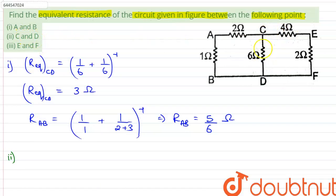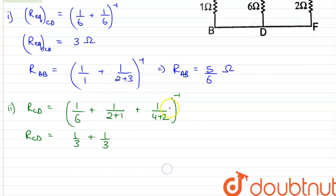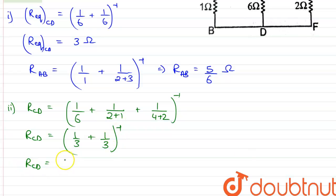Now for part two, the question asks us to find the equivalent resistance between point C and D. R_cd equals one over (six plus one over (two plus one)) plus one over (four plus two), all inverse. On summing these, we get one-third plus one-third, inverse, therefore R_cd equals three divided by two ohms.